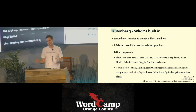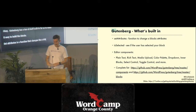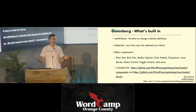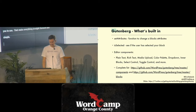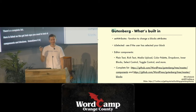Gutenberg has a ton of stuff built in to make building blocks super easy. setAttributes is a function that changes the block attributes for us — that's all built in. isSelected is also built in, which lets you know if the user has selected your block — are we currently editing it? And then there are editor components like plain text, rich text, and media upload — built-in components ready for you to use. Complete lists are on the GitHub repo; look especially at components and blocks. Sometimes it gets reorganized, so just pay attention to where things are at the moment.